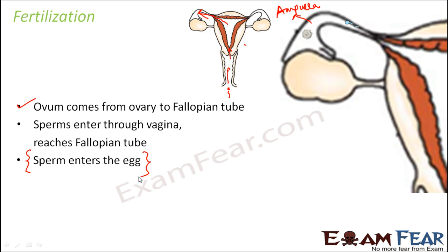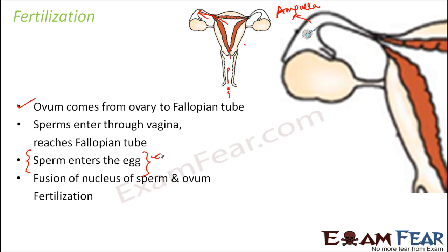What do we mean by fusion? When the sperm and the egg get mixed together, that is called fusion — the sperm actually enters inside the egg. The fusion of the nucleus of the sperm and ovum is actually fertilization. The sperm has a nucleus in the head region and the ovum has a nucleus called the germinal vesicle. Both contain genetic material, and the nuclei of the sperm and ovum fuse together — that is fertilization.